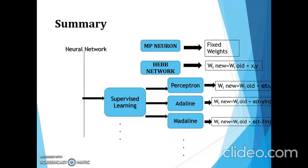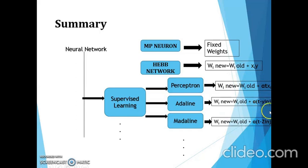This is a summary of lecture 12. In unit 2 we started with the MP neuron (fixed weights, excitatory or inhibitory), then the Hebb network (w_new = w_old + xi·y). Under supervised learning we covered three networks: the perceptron (w_new = w_old + α·t·xi), ADALINE (w_new = w_old + α·(t - y_in_j)·x), and MADALINE (w_new = w_old + α·(t - z_in_j)·x, using the hidden layer net input). Here alpha is the learning rate, t is the target, x is the input, y_in_j is the ADALINE net input, and z_in_j is the hidden layer net input. We will discuss the remaining supervised learning in the forthcoming class. Thank you.